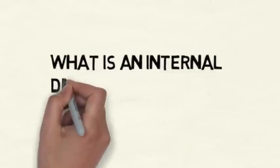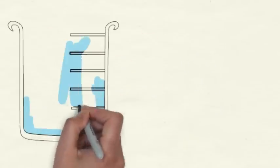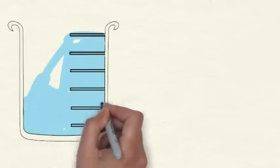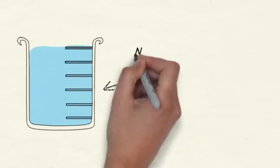What is an internal drainage board and what does it do? An internal drainage board, or IDB, is a public authority responsible for managing water levels and flood risk in areas with special drainage needs across England.